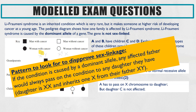Top tip number three: the pattern to look for to disprove sex linkage when the condition is caused by a dominant allele. Any affected father would always pass the condition onto any daughter they have if it were sex-linked. So you need to look for an affected father who has a daughter without the condition — that disproves sex linkage.